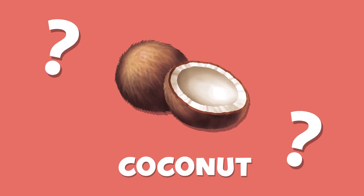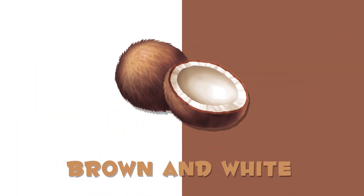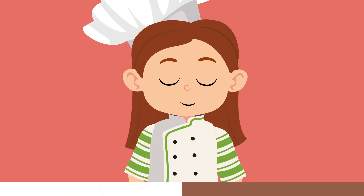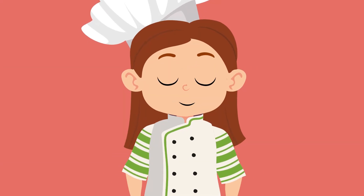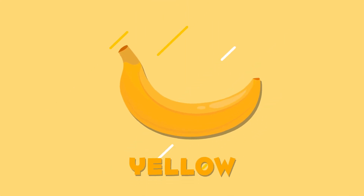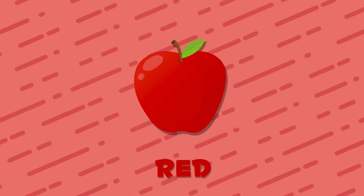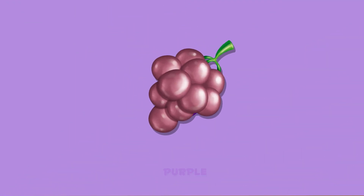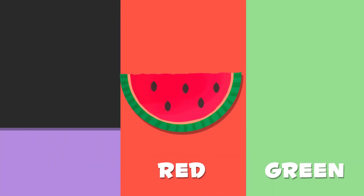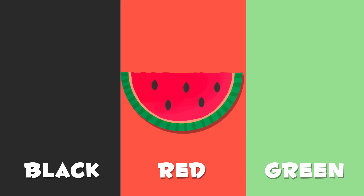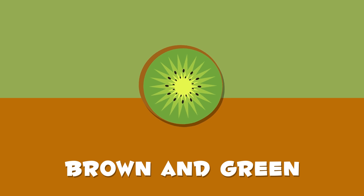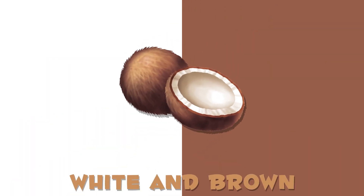And finally, we have a coconut. What color is the coconut? Brown and white — it's white on the inside and brown on the outside. Let's review: the banana is yellow, the apple is red, the orange is orange, the grapes are purple, the watermelon is green on the outside, red on the inside, and the seeds are black. The kiwi is brown and green, and the coconut is white and brown.